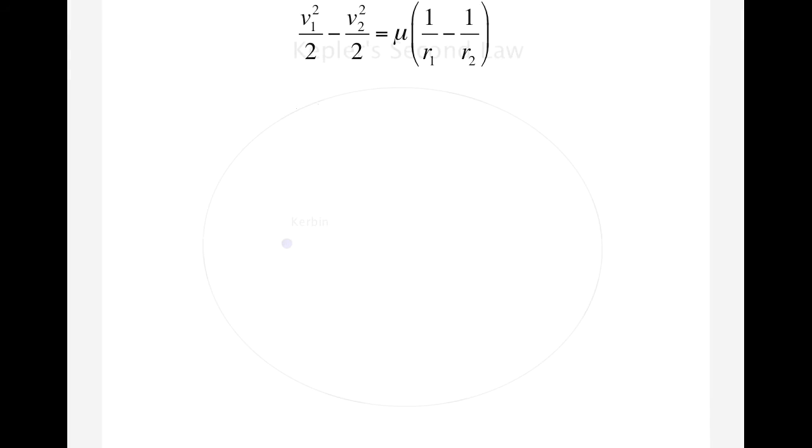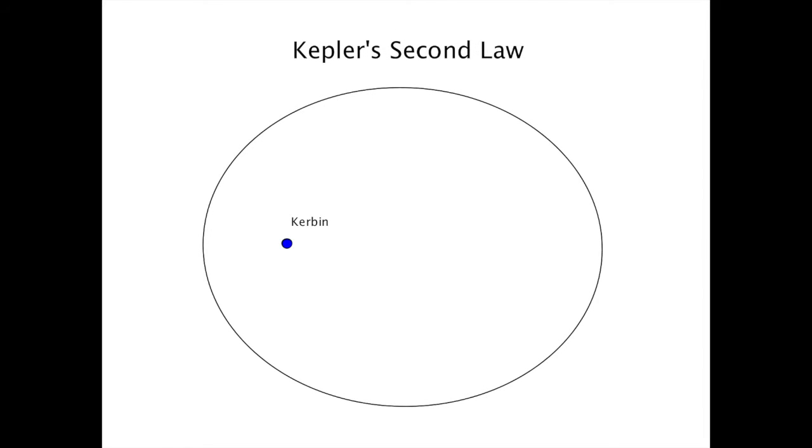What we need is another relationship between the radii and velocities. This relationship is given to us by Kepler's laws. Johannes Kepler was a 17th century German mathematician and astronomer who summarized planetary motion into three concise laws. The first law states that all orbits are ellipses with the principal body at one of the foci of the ellipse. So here I have an ellipse with Kerbin at one of the foci. I should mention that Kepler's laws are a very good approximation of real orbits as long as the principal body is much, much more massive than the orbiting body. For example, a satellite about the Earth, or the Earth in orbit about the Sun.